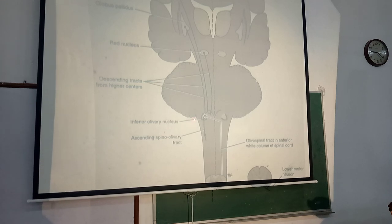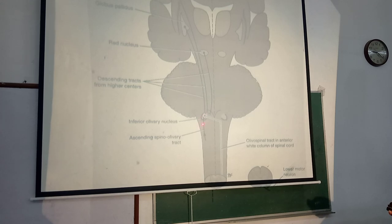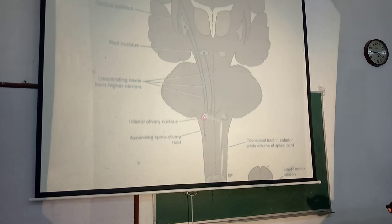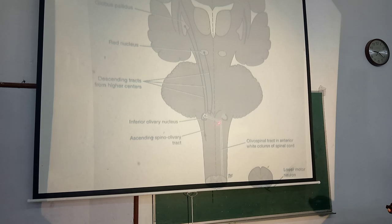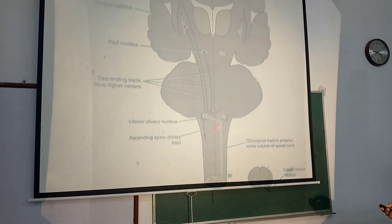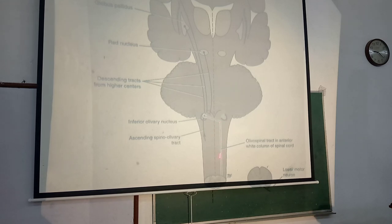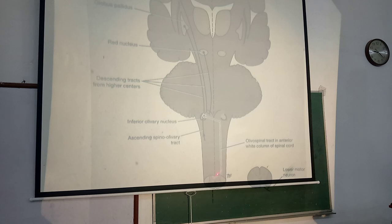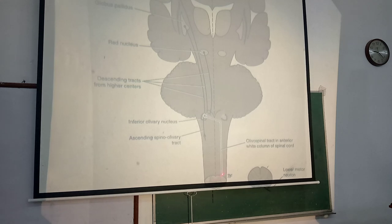The olivospinal tract originates from the inferior olivary nucleus in the lower part of the medulla oblongata. The tract fibers after origin cross over to the opposite side, enter the lateral white column, and descend in the spinal cord. These tract fibers terminate onto the motor neurons in the ventral horn of the spinal cord at various levels.